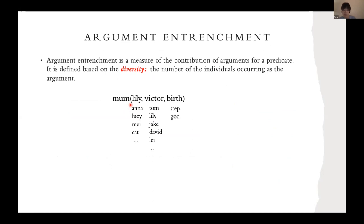For example, in the mom assertion in your data, you could have lots of different individuals as a mom and lots of individuals as children, but there will be limited types of mom.